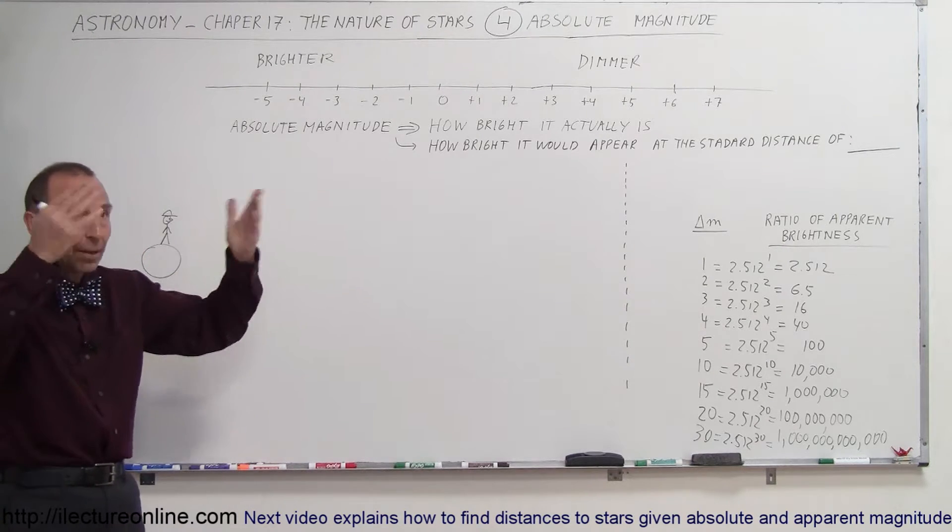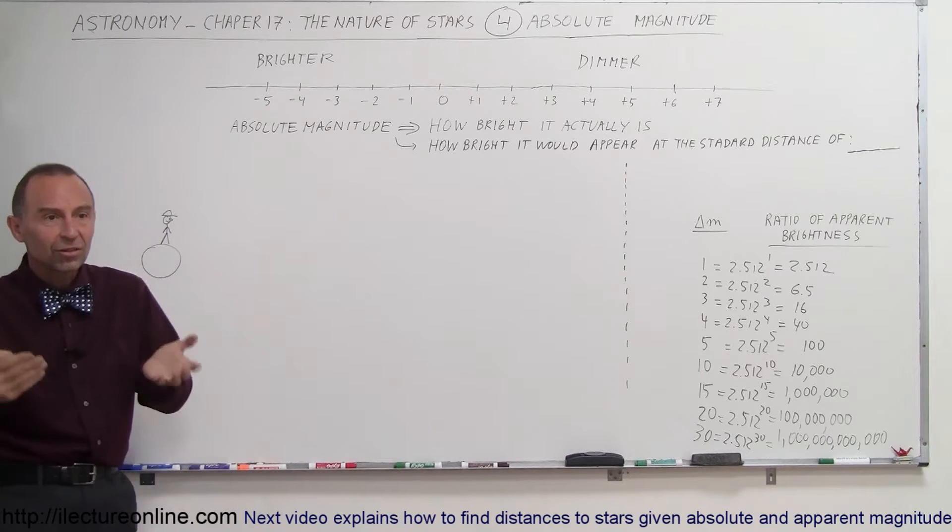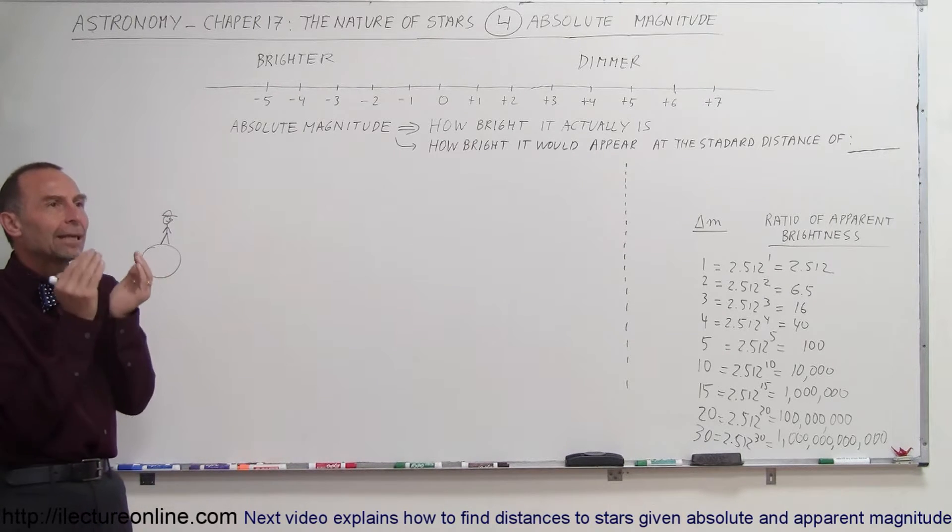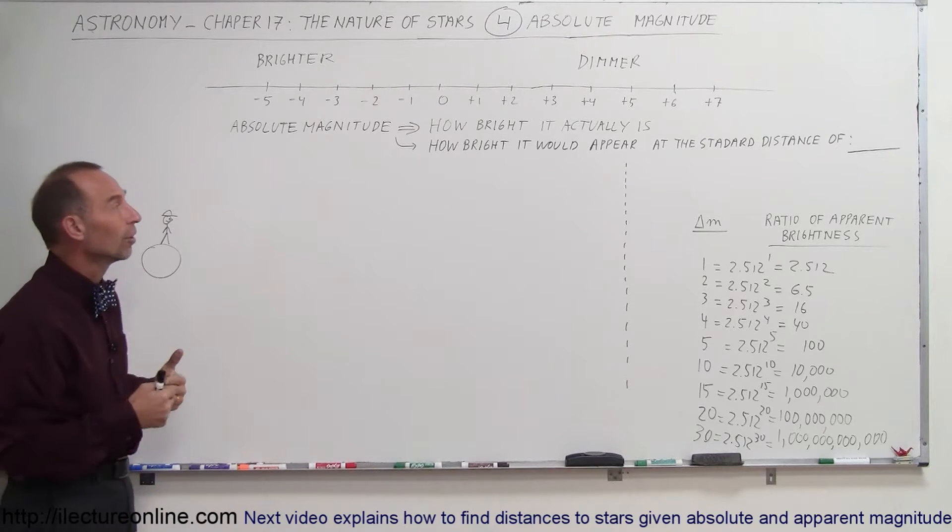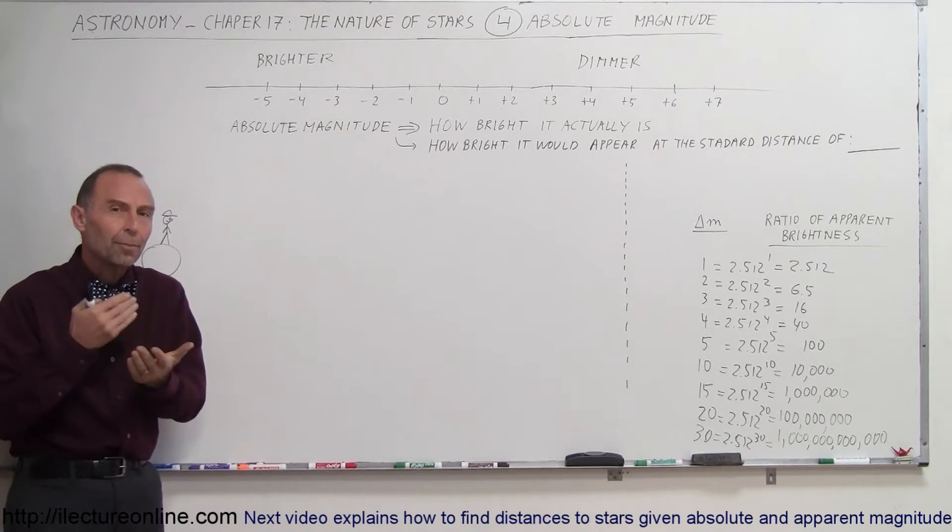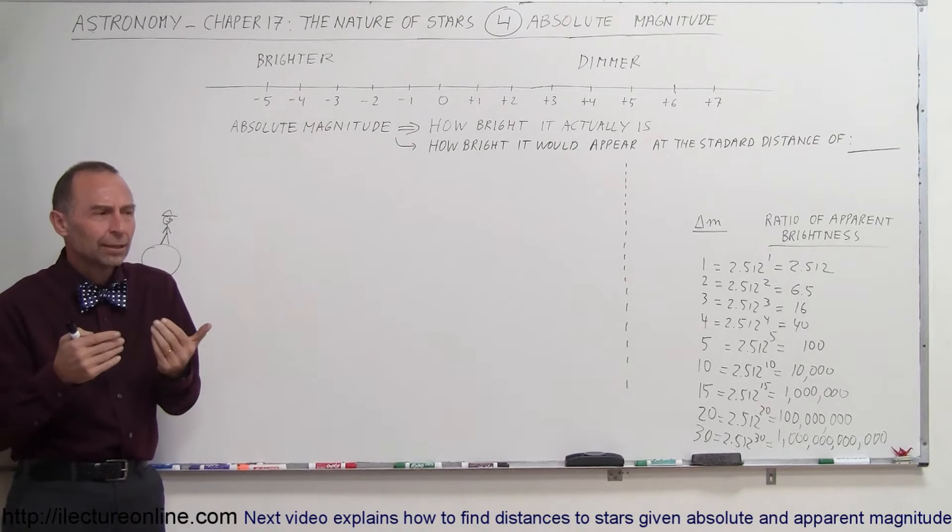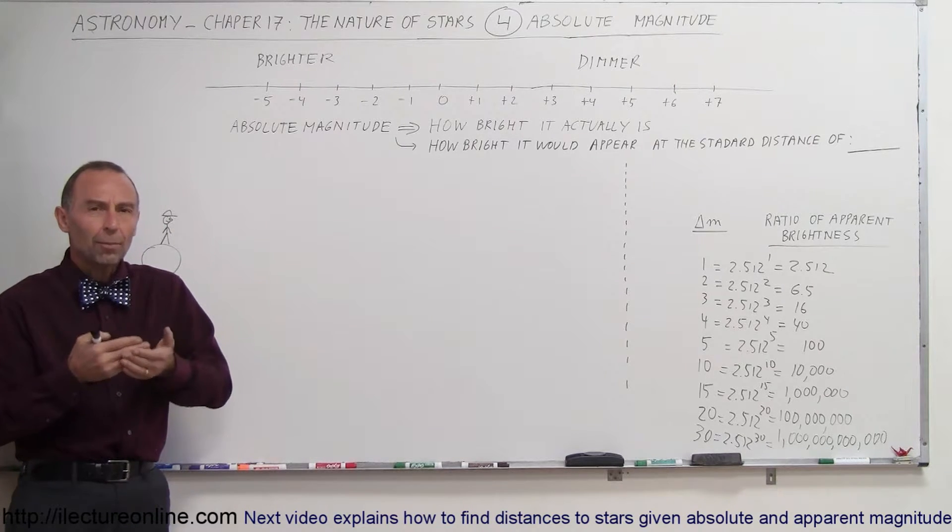So relative from the Earth, we look at the object in the sky - stars, galaxies, nebulas, whatever they may be - and they appear to us at a certain brightness, so that's called the apparent brightness. But the absolute brightness is how bright they actually are. Now, that's kind of a strange concept. How bright are they?